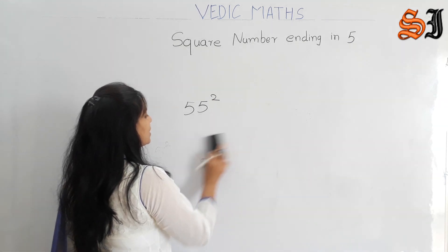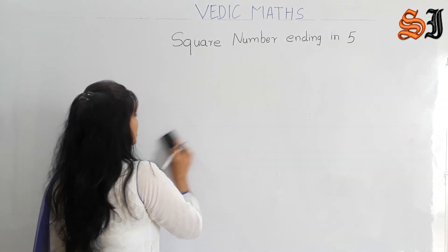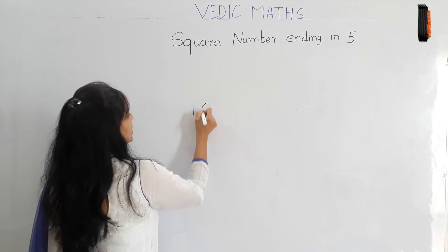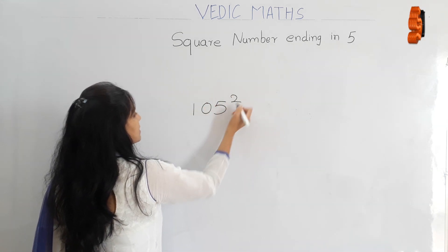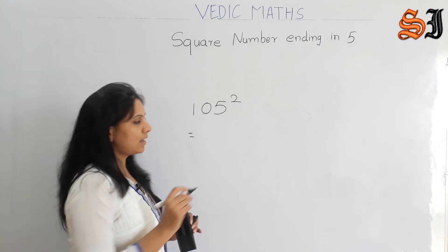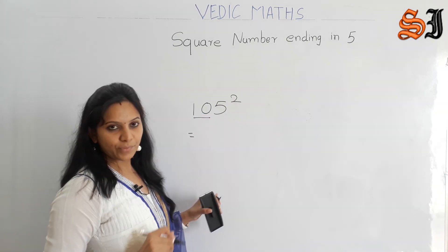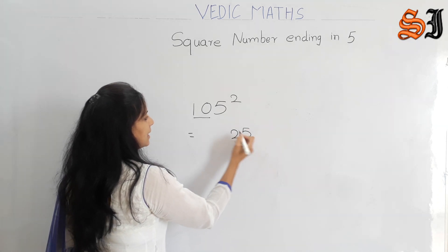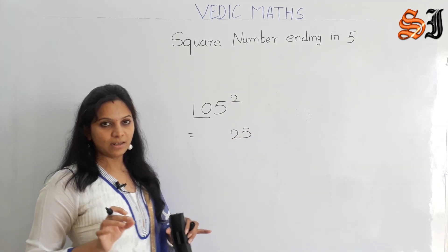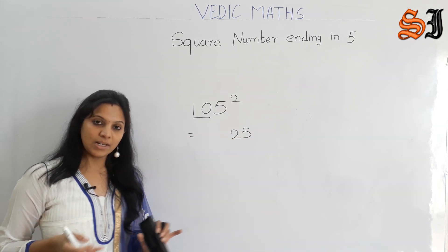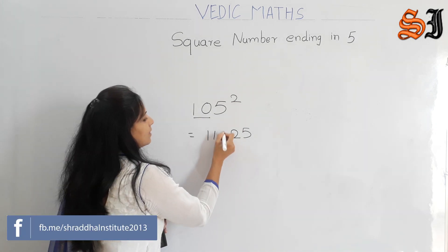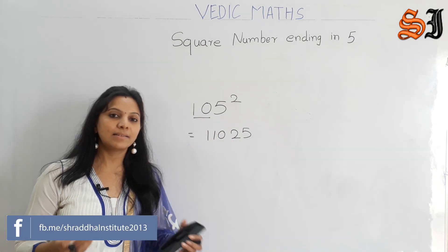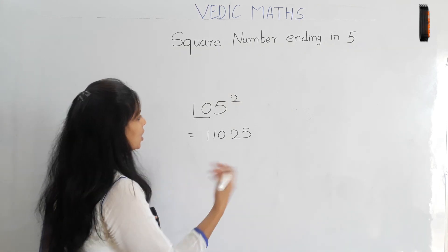Now for 2-digit and 3-digit numbers ending in 5 — suppose 105 squared. Again, 5 squared is 25. The first number is 10, and the next number is 11. So 10 into 11 is 110, giving us 11025. The same method and same rule apply for 3-digit numbers as well.